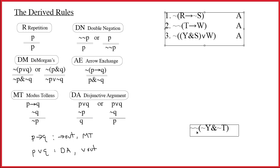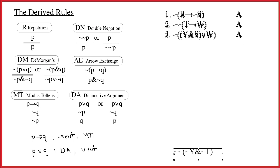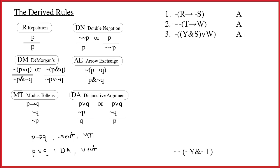Here is an argument with three premises and a conclusion, and this is going to make use of pretty much all our new derived rules. Starting at the top, I immediately notice that the main connective on line one is a tilde. Whenever the tilde is the main connective, that's going to be good news. The main connective inside is an arrow, so in this particular case I'm using arrow exchange.